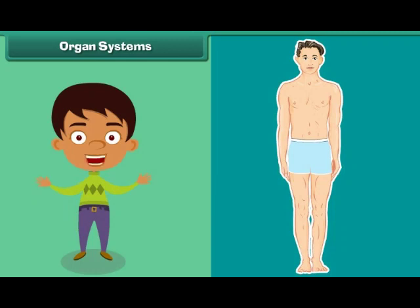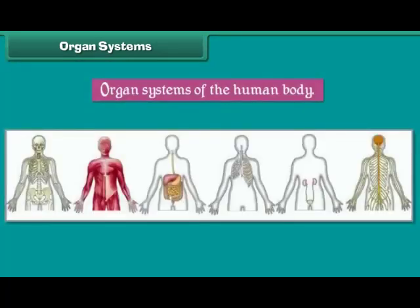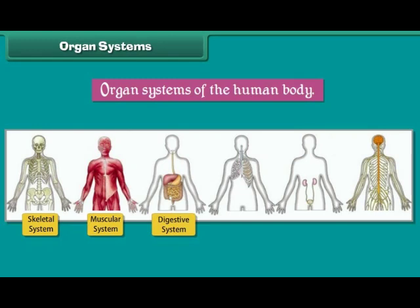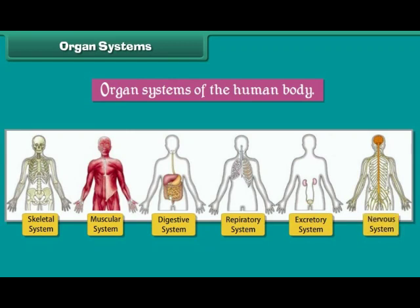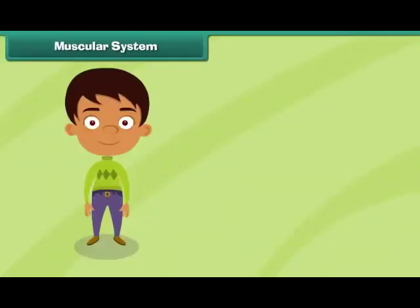Each organ system performs a special function. Some important organ systems of the human body are the skeletal system, muscular system, digestive system, respiratory system, excretory system, and nervous system. Let us now learn how each organ system works.